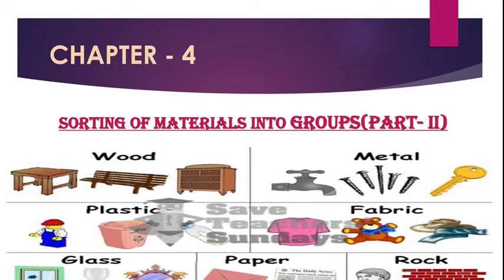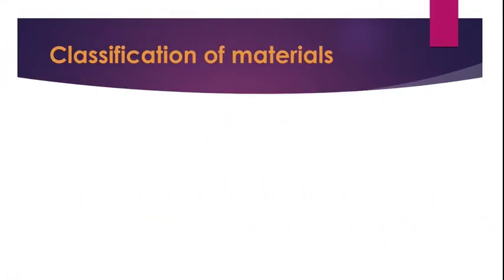Materials are classified on the basis of the following properties: their appearance, hardness, solubility, heaviness or lightness, and lastly transparency.